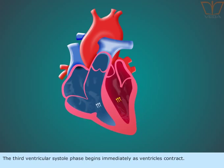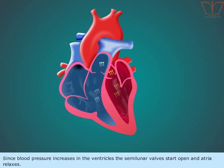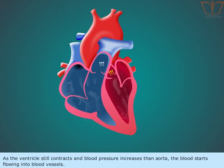The third ventricular systole phase begins immediately as the ventricles contract. Since blood pressure increases in the ventricles, the semilunar walls start to open and the atria relaxes. As the ventricle still contracts and blood pressure increases beyond the aorta, the blood starts flowing into the blood vessels.